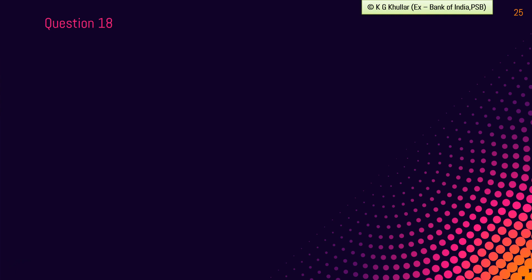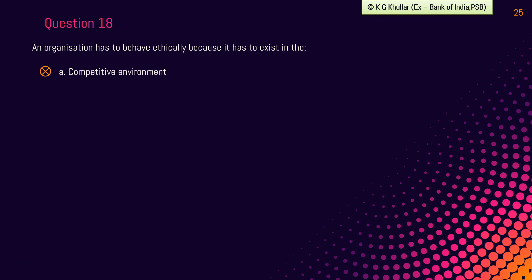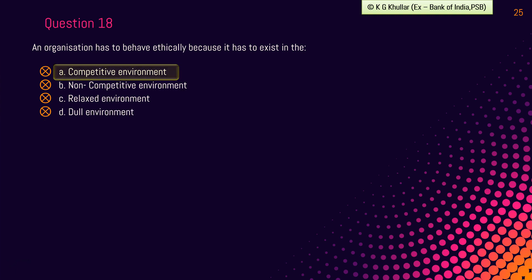Next question: an organization has to behave ethically because it has to exist in the — option A: competitive environment; option B: non-competitive environment; option C: relaxed environment; option D: dull environment. This is one of the easier questions and the correct option is option A — competitive environment.